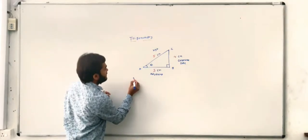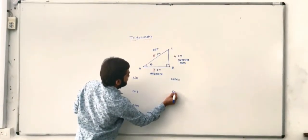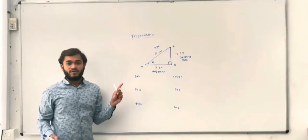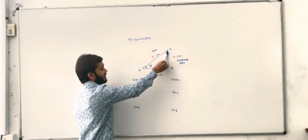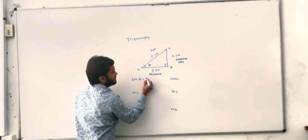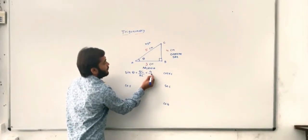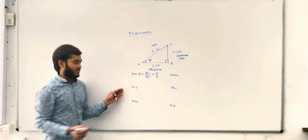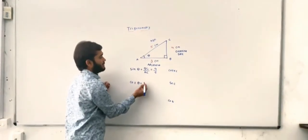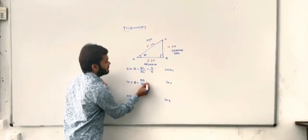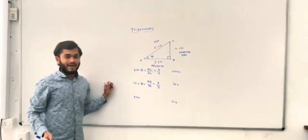In trigonometry there are 6 functions: sin, cos, tan, cosec, sec, and cot. If we write sin theta, and A is theta, then sin theta equals opposite side upon hypotenuse. The opposite side is BC, so sin theta is 4 upon 5. If we want to write cos theta, then cos theta equals adjacent side upon hypotenuse — that means AB upon AC. The size of AB is 3 and the size of AC is 5, so cos theta equals 3 by 5.